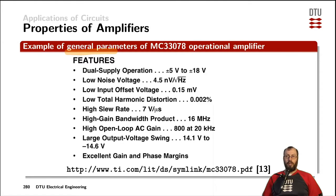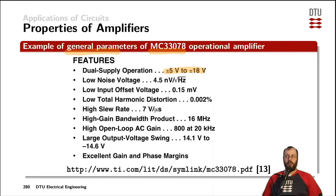All of these generic parameters are showing up on the title page of the datasheet for that operational amplifier, and all kinds of other operational amplifier datasheets would look very similar. First of all, we have a specification of the supply voltage range of that amplifier. In that case, it can operate from plus-minus 5 volts to plus-minus 18 volts.